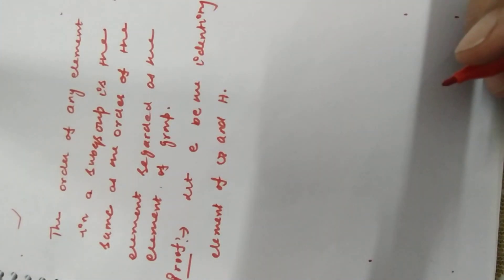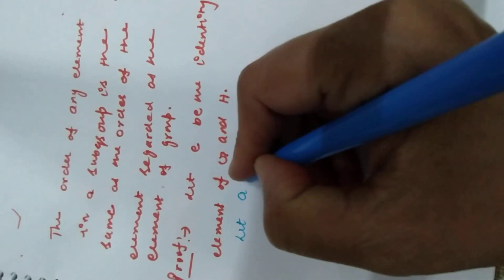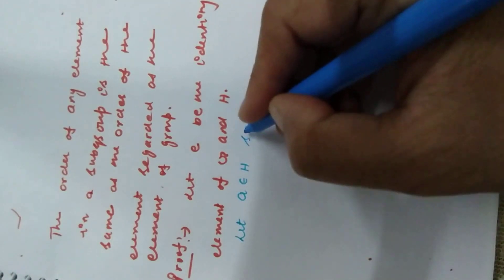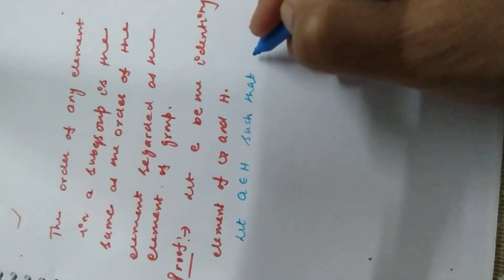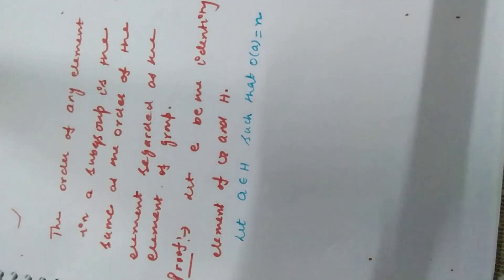Identity element of G aur H ka same hai, to le liya humne e. And let a belongs to H such that order of a is equal to n — yeh le liya. Samajh rahe hain? Yeh aapne suppose karna hai: a belongs to H, aur is theorem mein yeh prove karna hai.